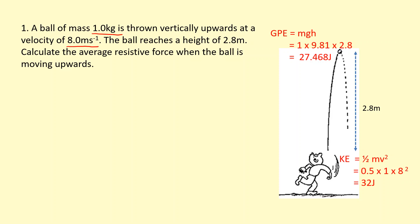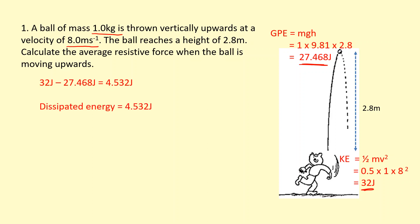As you can see, there is a difference. Where has that energy gone? We know energy can't be created or destroyed, so it's just been transferred from one form to another. We've got 4.532 joules missing — that energy is the energy that's been dissipated to the surroundings.